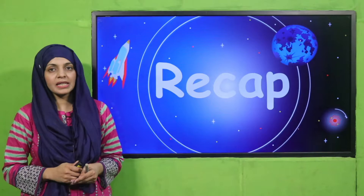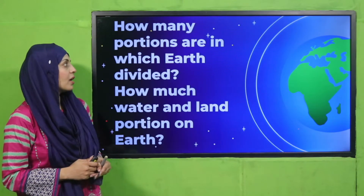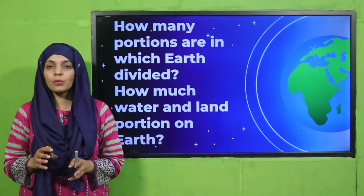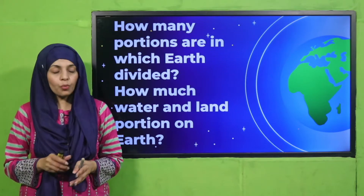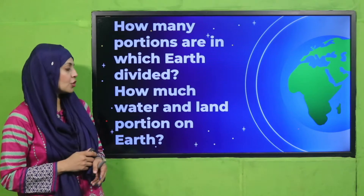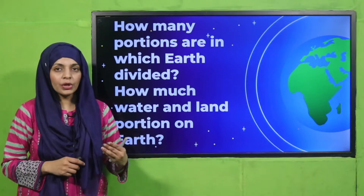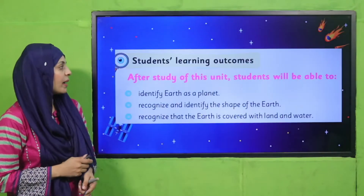My dear students, first of all let's quickly recap what we did in the previous lecture. Quickly answer the following question: how many portions is the earth divided into? Two portions. And how much of each? Water is two-thirds and land is one-third.